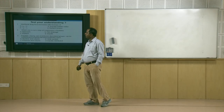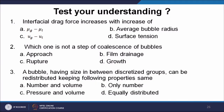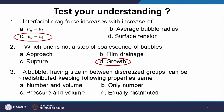Let us test your understanding. First question: interfacial drag force increases with increase of — (A) mu_G - mu_L, (B) average bubble radius, (C) U_G - U_L, (D) surface tension. The correct answer is C, because it depends on U_G minus U_L. Second question: which one is not a step of coalescence of bubbles — approach, film drainage, rupture, or growth? Growth is the correct answer, as there is no growth step in coalescence. Third question: a bubble having size in between a discretized group can be redistributed keeping which properties the same — number and volume only, number pressure and volume, or equally distributed? The correct answer is number and volume.